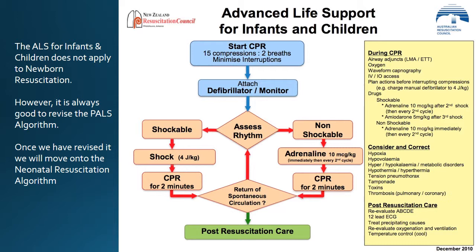Shockable rhythm: shock 4 joules per kilo, CPR for 2 minutes. If no return of spontaneous circulation, assess the rhythm — shockable: shock 4 joules per kilo, CPR for 2 minutes, and continue in that cycle until you have a return of spontaneous circulation, then provide post-resuscitation care.